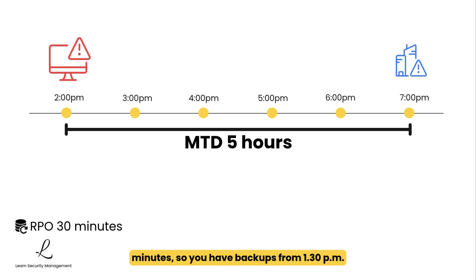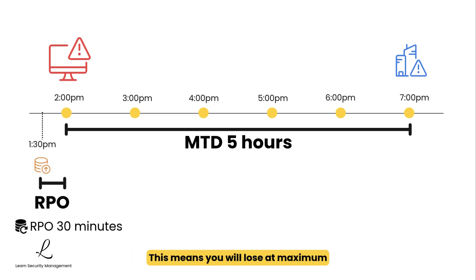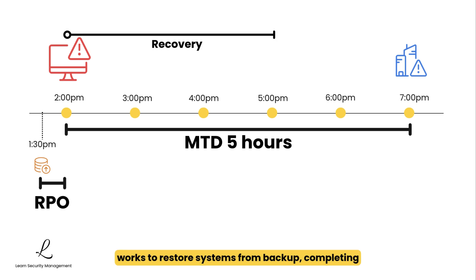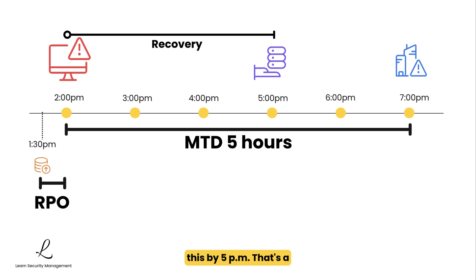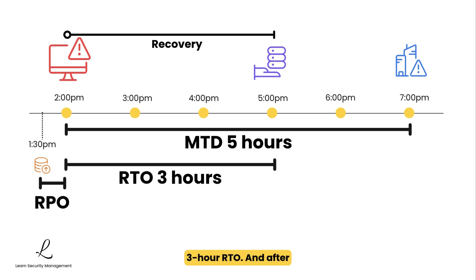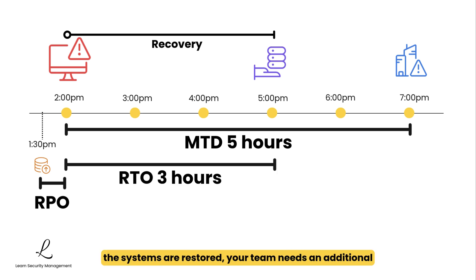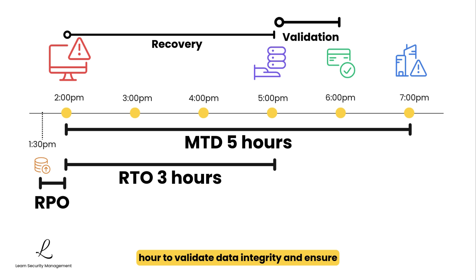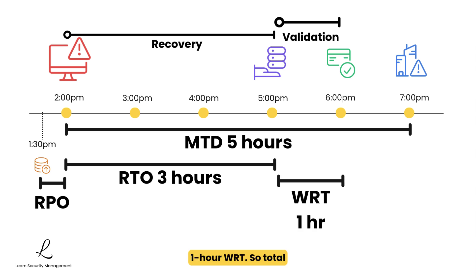Your RPO is 30 minutes, so you have backups from 1:30pm — meaning you will lose at maximum 30 minutes of data. Your team works to restore systems from backup, completing this by 5pm. That's a 3-hour RTO. After the systems are restored, your team needs an additional hour to validate data integrity and ensure all connections are working. That's a 1-hour WRT.